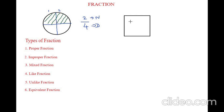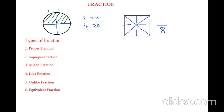So now let's see another example. I have a square here. The square is divided into 1, 2, 3, 4, 5, 6, 7, 8 — so I have divided it into 8 parts. I will write 8 in the denominator, and now I am going to shade 2 parts. So this fraction will be written as 2 by 8. The total number of parts is written down and the shaded parts are written up. This is called the numerator and this is the denominator.